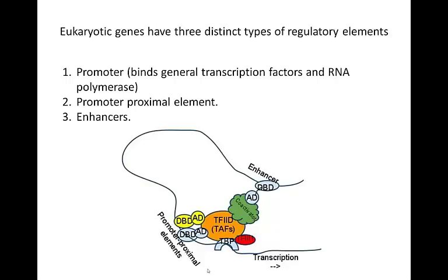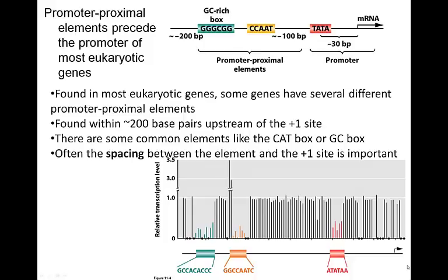There are also promoter proximal elements — sequences fairly near to the promoter — where proteins bind and can assist in gene regulation. And then there are enhancers, found at some distance from the start of transcription. These also have transcriptional regulator proteins that bind to them and can activate or repress transcription of that particular gene.